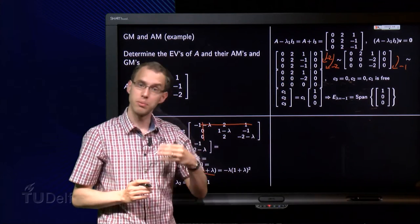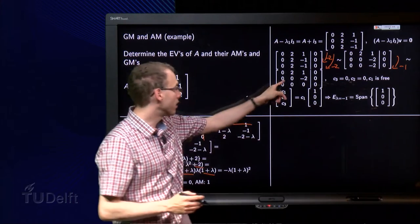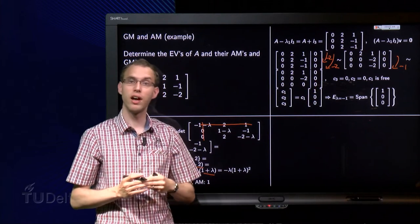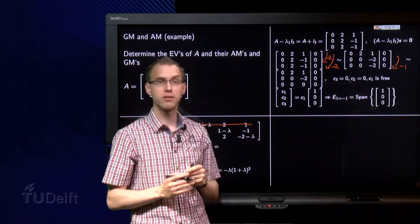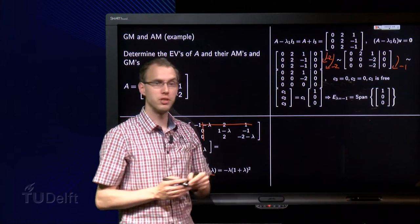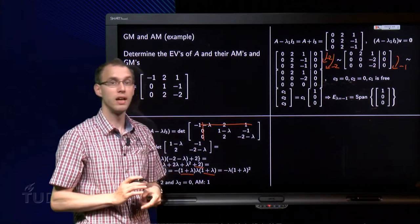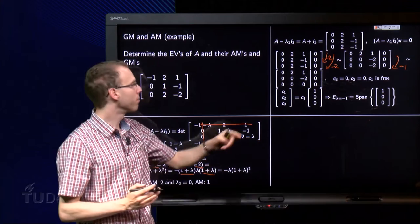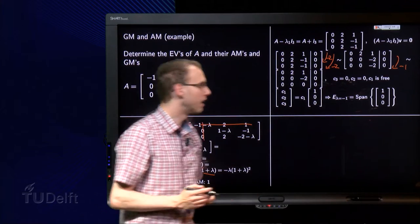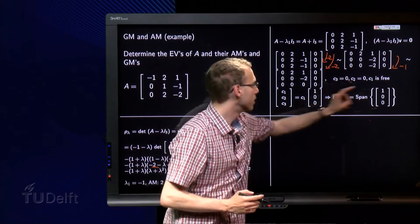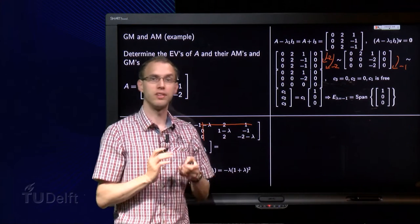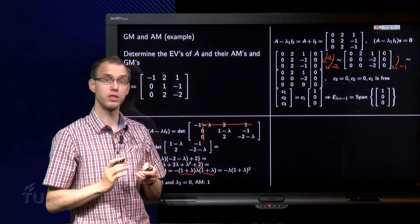Here we have 0 times c1 plus 0 times c2 plus minus 2 times c3 equals 0, so c3 equals 0, and the first row gives 0 times c1 plus 2 times c2 plus 0 equals 0, so c2 equals 0, and c1 is free. Make the parametric vector form, and we find E lambda minus 1 equals the span of (1, 0, 0). So there we are, then we are done with lambda equals minus 1, which was quite some work.